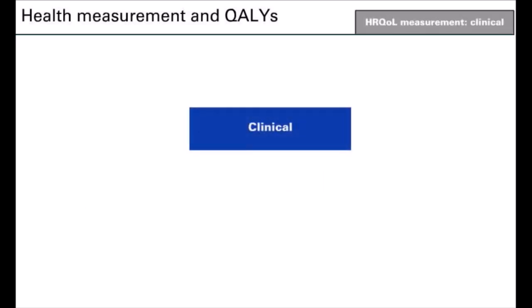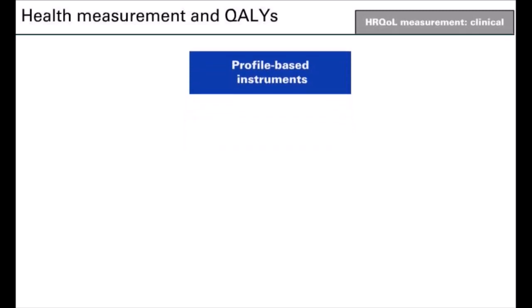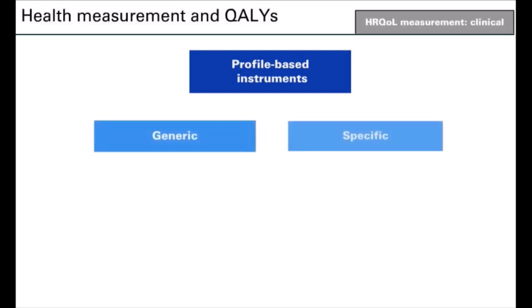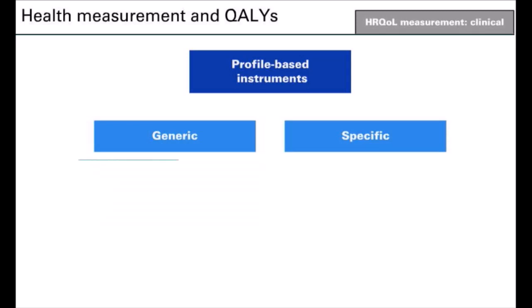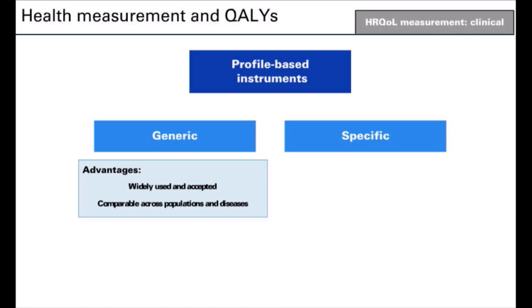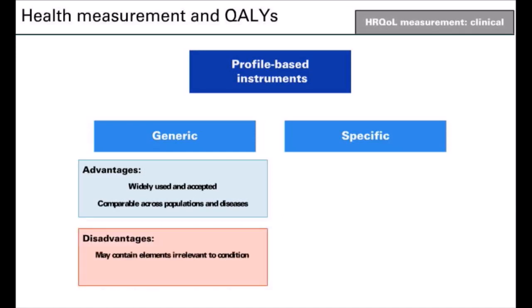Instruments used to measure health-related quality of life as a clinical endpoint are known as profile-based instruments. These are developed based on psychometric theory and can be categorized as either generic or specific. Generic instruments can be used in any disease or population. There are many available that are widely used and accepted, and these produce results comparable across different populations and diseases. However, they may contain elements that are irrelevant to the condition being investigated.